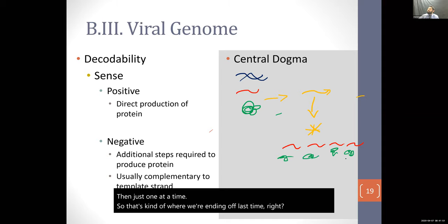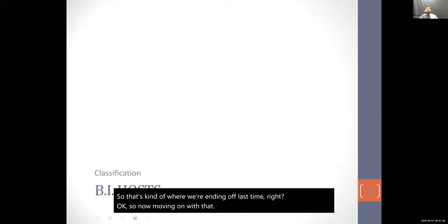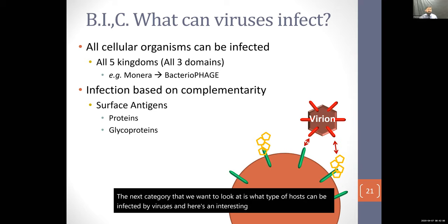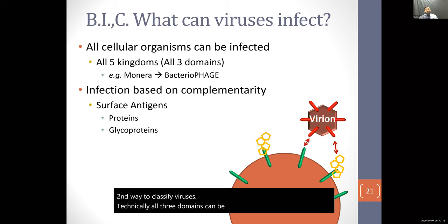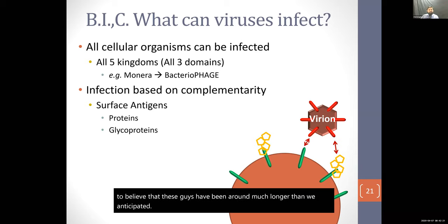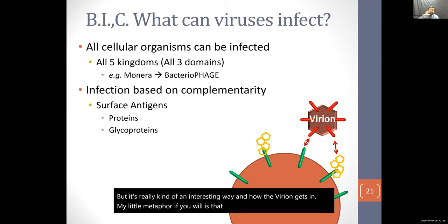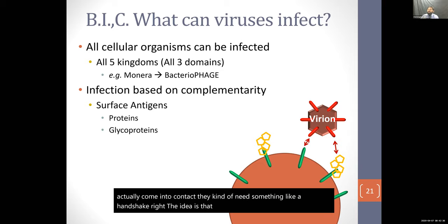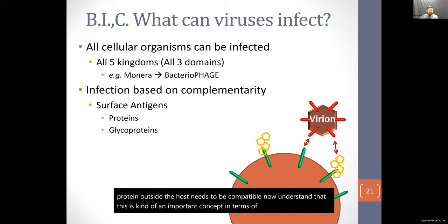Moving on, the next category is what type of hosts can be infected by viruses. As a second way to classify viruses, technically all three domains can be infected — there's no organism on this planet we know of that can't be infected by a virus. In order for a virion and a host to come into contact, they need something like a handshake: a protein outside the virus and a protein outside the host need to be compatible.